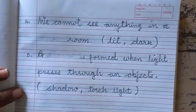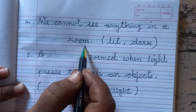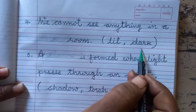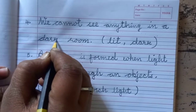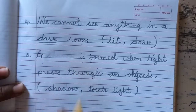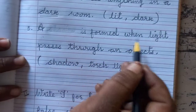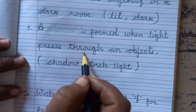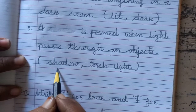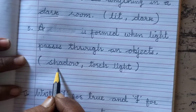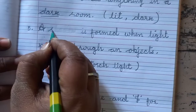Number 4: We cannot see anything in a blank room. Options: lit, dark. Answer will be dark. Number 5: A blank is formed when light passes through an object. Options: shadow, torch, light. Answer will be shadow.